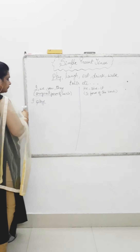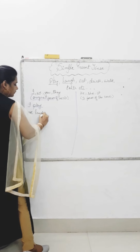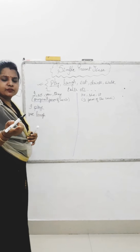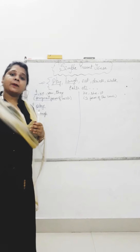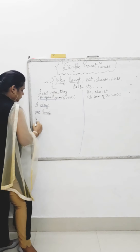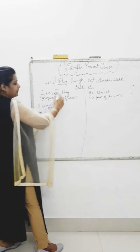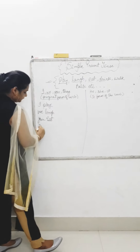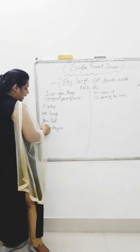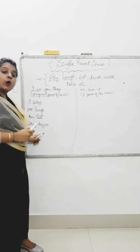Then, we. We laugh. All these are the original form, children. 'We laugh' — no changes to 'laugh.' It is Simple Present Tense when there is no change to the main form of the word. Then, you. You eat — again, the original form, no changes. Then, they drink. I play, we laugh, you eat, they drink — no changes. These are the original forms of the word.